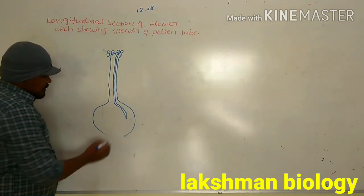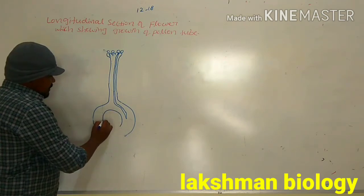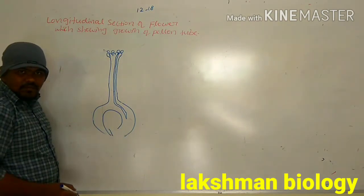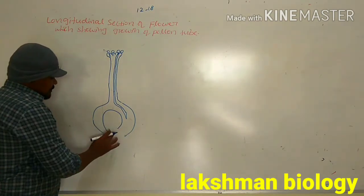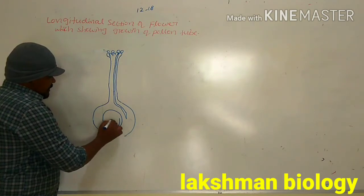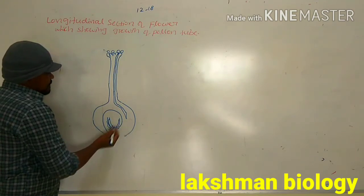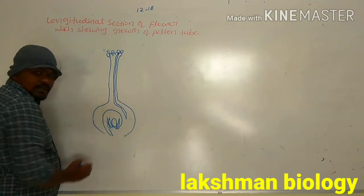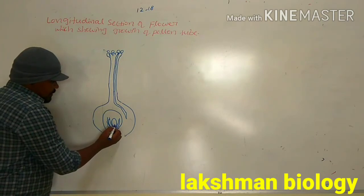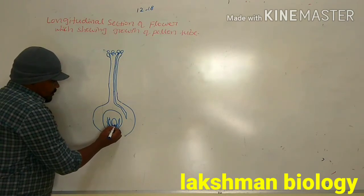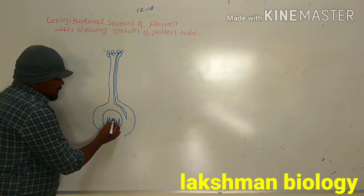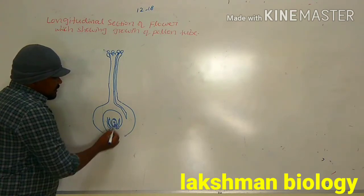Inside of the pollen tube, we also need to draw the ovule diagram. This is the ovule, which is attached on the placenta of the flower. These are the integuments. Inside the embryo sac, we can see the embryo cell which contains two synergies and one egg cell. These are the synergies and this is the egg cell. And here, you can see three antipodals. In the middle, you can see the polar nuclei.